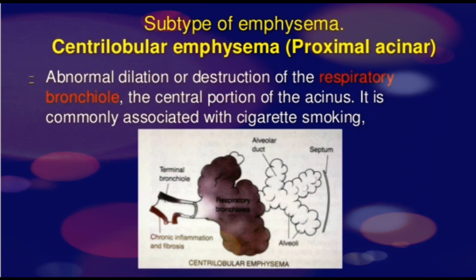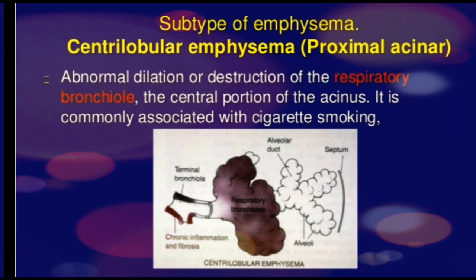Subtypes of emphysema: the first is proximal acinar emphysema, also known as centrilobular emphysema. It is the abnormal dilatation or destruction of respiratory bronchioles, which is the proximal part of the acinus. Alveolar ducts and alveoli are relatively spared in centrilobular emphysema, and it is related to cigarette smoking. A useful mnemonic is C–C: C for centrilobular emphysema and C for cigarette smoking.